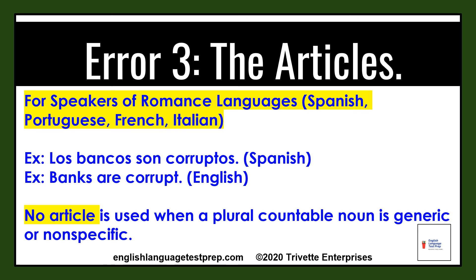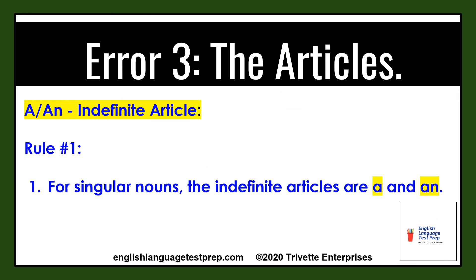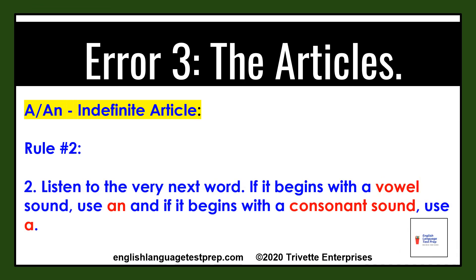A and an: the indefinite article. Rule number one: for singular nouns, the indefinite articles are a and an. Rule number two: listen to the very next word in the sentence. If it begins with a vowel sound, you use an. And if it begins with a consonant sound, you use a.